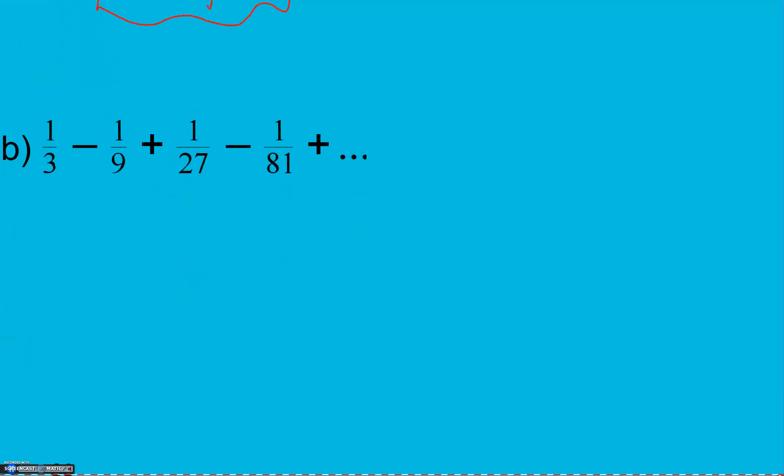To go from one to one, we multiply by one, times one, times one, every time. Three to nine, we multiply by three and we change signs so it's a negative. Multiplied by negative three again, multiplied by negative three again. So our r value is negative one third. Our signs alternate plus, minus, plus, minus, plus. Which means it's negative. Every time we're multiplying by a negative. And it's one third.